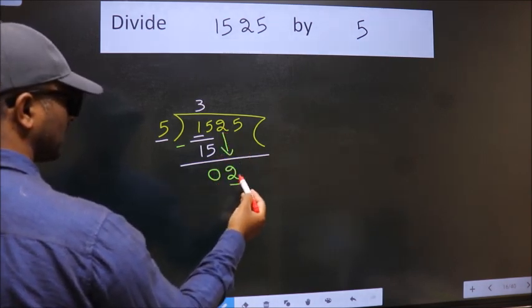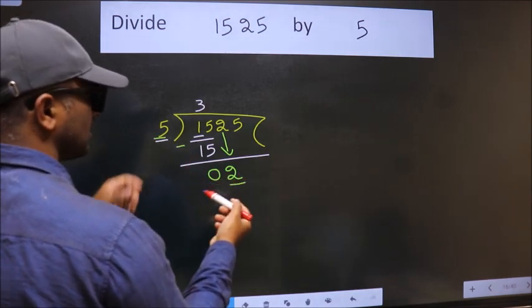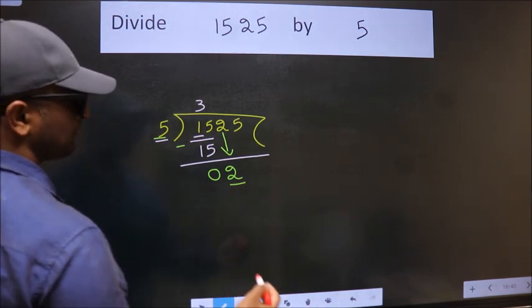Now here we have 2, here 5. 2 is smaller than 5, so we should bring down the second number.